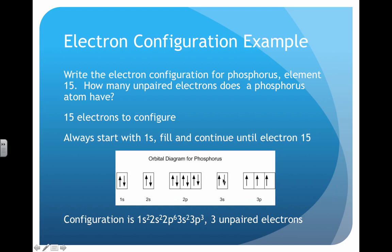3s gets two electrons, and then 3p follows. There are only three electrons left, and because of Hund's rule, each one of the orbitals gets one electron.